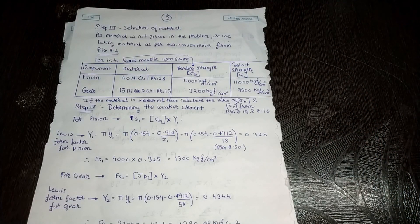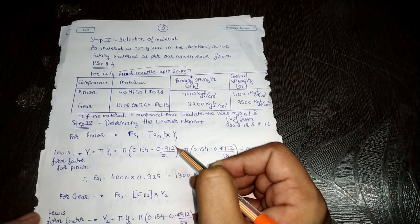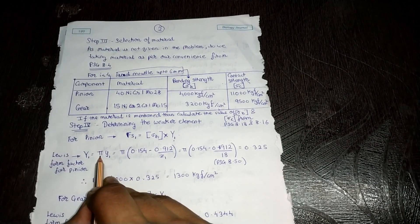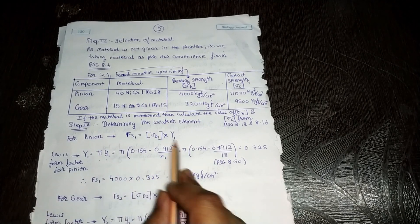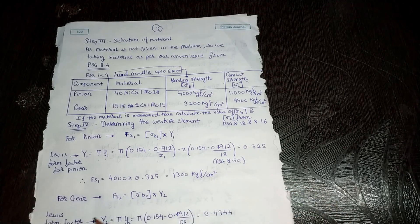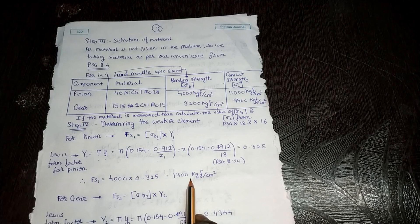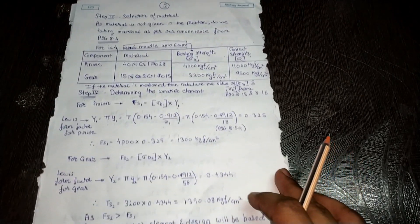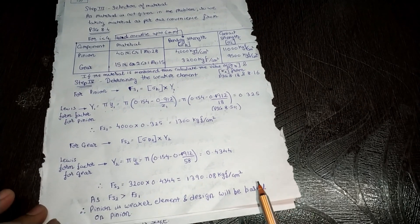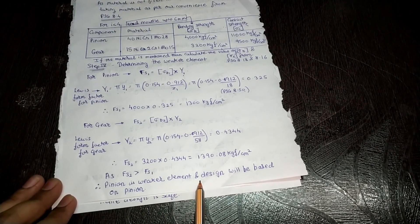Our fourth step is determining the weaker element. For the pinion, fs1 = σb1 × Y1, where Y1 is the Lewis form factor for the pinion. To calculate Y1, we use the formula π × y1 from PHC 8.50. Substituting the values, fs1 comes out to be 1300 kgf/cm². Similarly for the gear, fs2 = 1390.08 kgf/cm². Since fs2 is greater than fs1, the pinion is the weaker element, and the design will be based on the pinion.